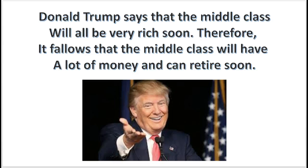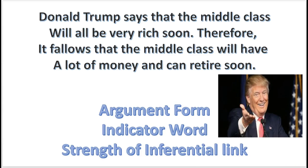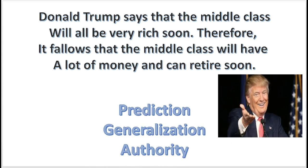Here is another practice problem. Listen to this argument: Donald Trump says that the middle class will all be very rich soon. Therefore, it follows that the middle class will have a lot of money and can retire soon. That's right, it's an inductive argument. The argument form — the argument contains no indicator words, and the conclusion does not follow either necessarily or probably. But the argument does have an inductive form: argument from authority. The argument concludes that the middle class will be very rich soon simply because Donald Trump, the authority, says so.